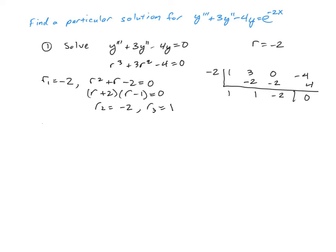So we know that our homogeneous solution is c1e to the negative 2t plus c2te to the negative 2t plus a c3e to the t. And so now when we form our particular solution, and actually those are all x's because this problem was phrased with x instead of with t.